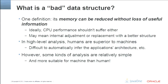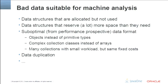When looking for bad data structures, the thing that usually yields the best results is high-level analysis — inspecting the architecture of your application. Humans are superior here because machine analysis of high-level things is far from ideal. However, some kinds of analysis are relatively simple, and it turns out this kind of analysis is often more suitable for machines rather than humans. When there is a vast number of data structures, it will take much less time to do this automatically rather than look at them one after another.